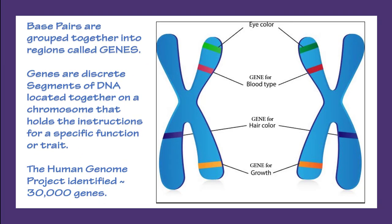Base pairs are grouped together into regions called genes. Genes are discrete segments of DNA located together on a chromosome that hold the instructions for a specific function or trait. The Human Genome Project identified 30,000 genes.